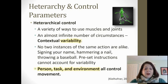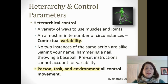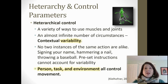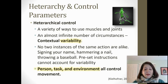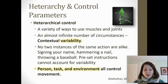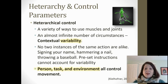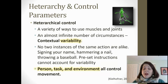Regarding heterarchy, we have to think about the almost infinite number of circumstances in which people move — this is called contextual variability. No two instances of the same action are alike. Going back to the example of signing our name: we might sign it on a keypad at the grocery store, in the sand with our toe, or vertically on a marker board. There are some similarities, but the control parameters change the task in an infinite number of ways.